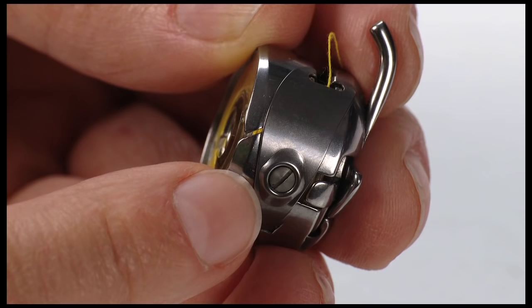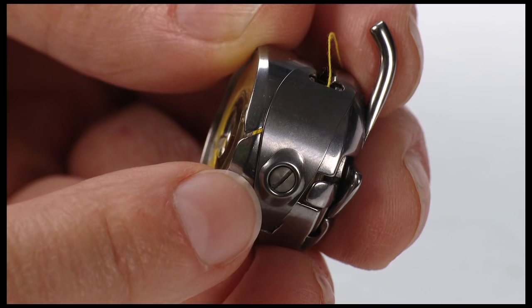To adjust the bobbin thread tension, turn the small screw located here on the side of the bobbin case. Turn the screw to the left if the tension is too tight, or turn the screw to the right if the tension is too loose.